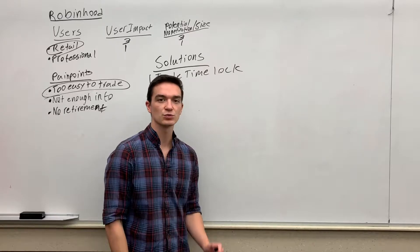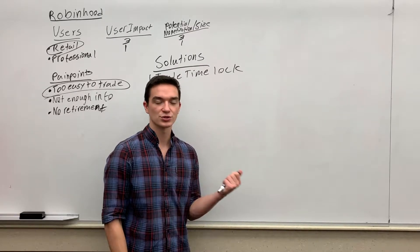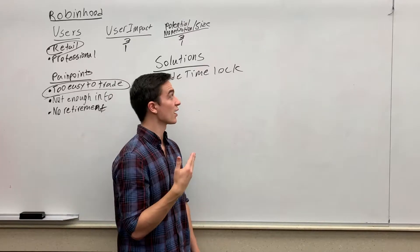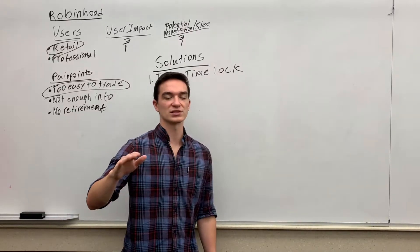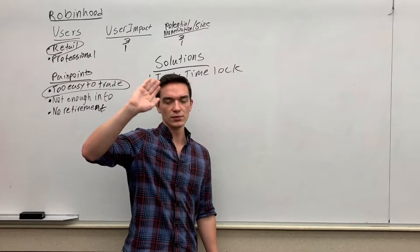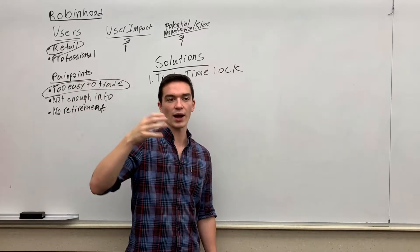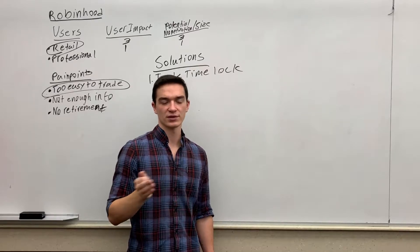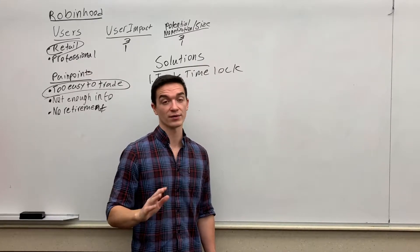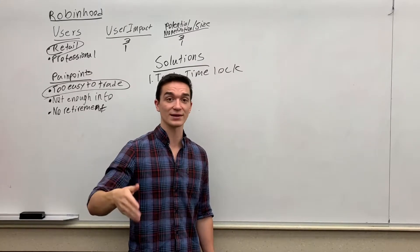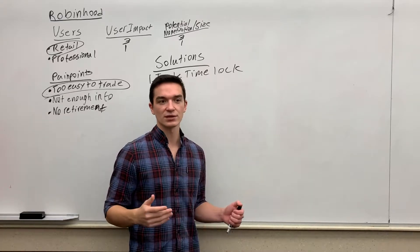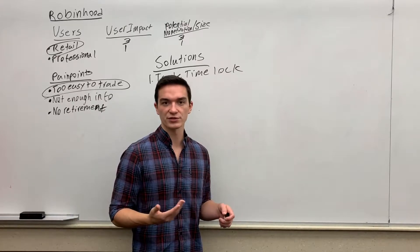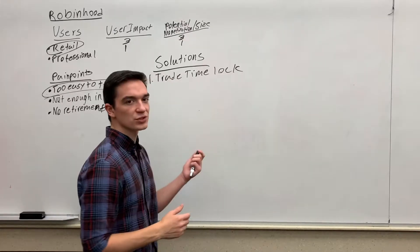So if I buy Amazon, I would be able to use this trade time lock so that I wouldn't be able to sell Amazon until a specific date. So I, as the user, could self-impose restrictions on myself to not let myself sell or buy more of that stock until a set time period. Obviously, what if you actually need to and you change your mind? Maybe you could add some other layer of security, but that's the first solution that really comes to mind—just allowing users to set their own self-imposed restrictions.